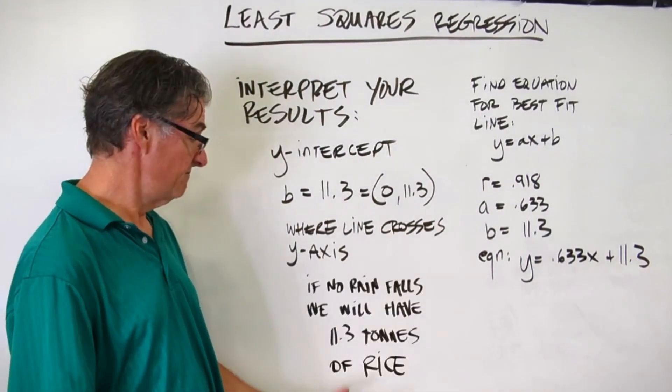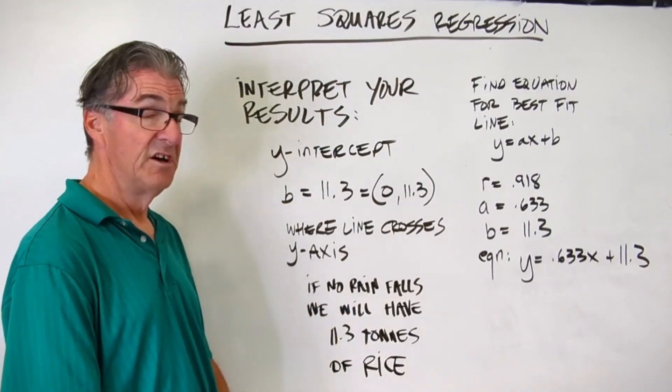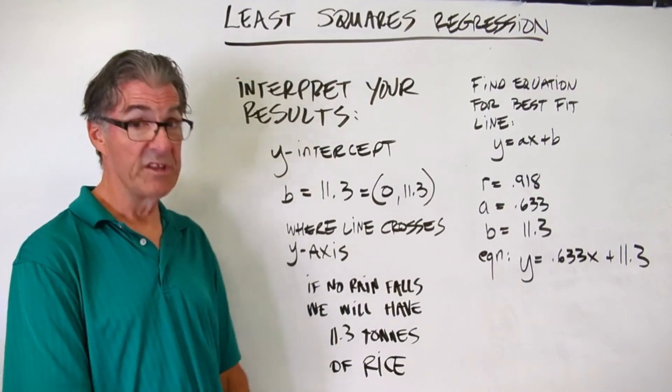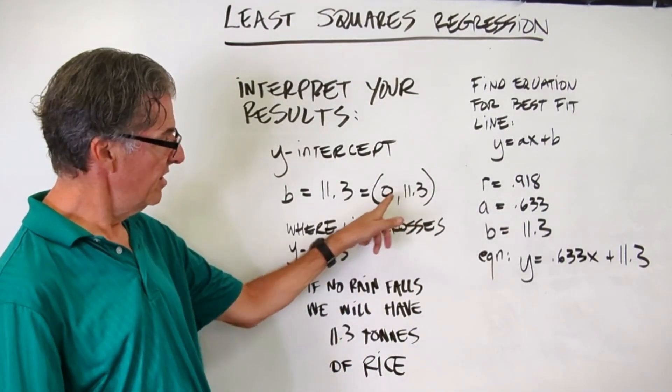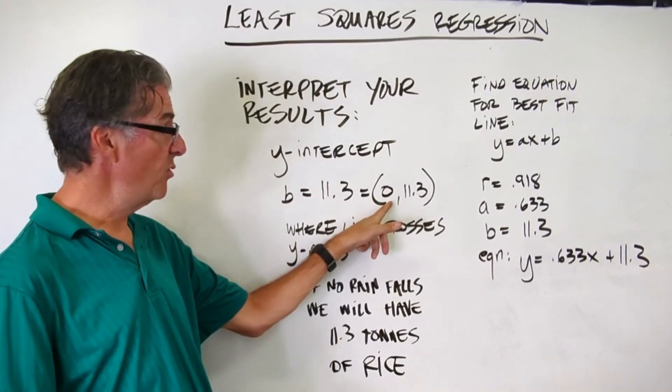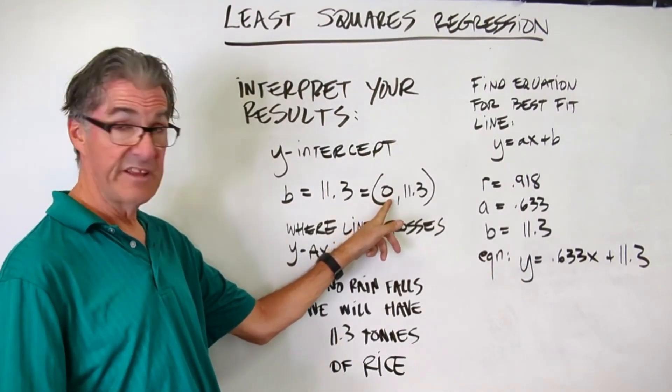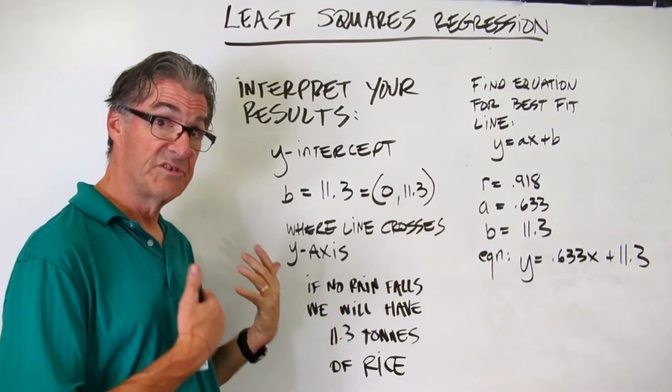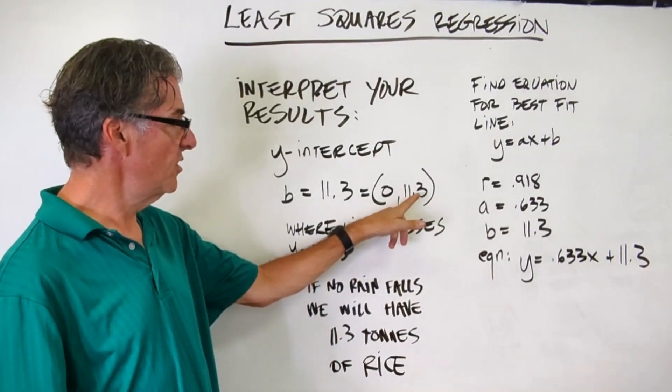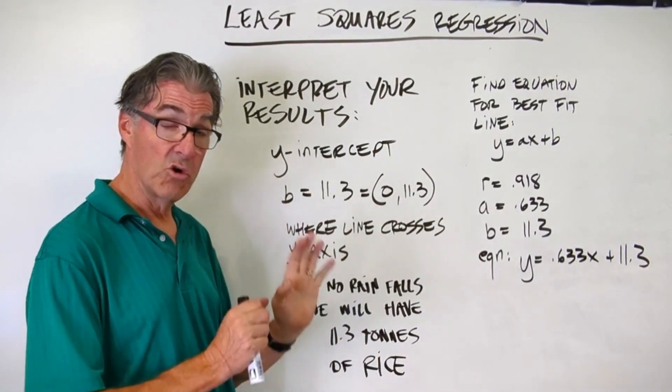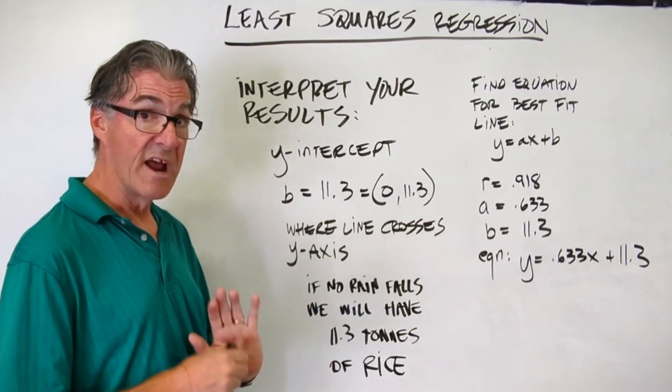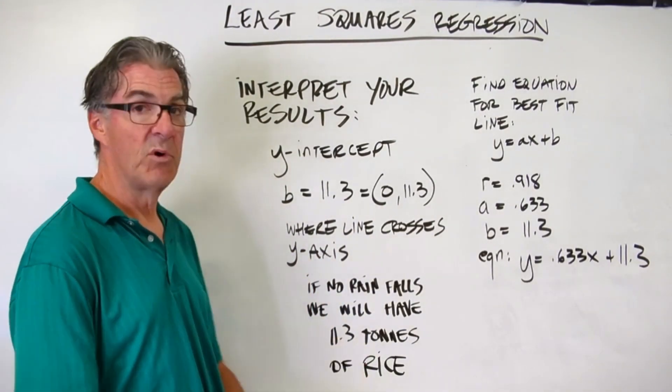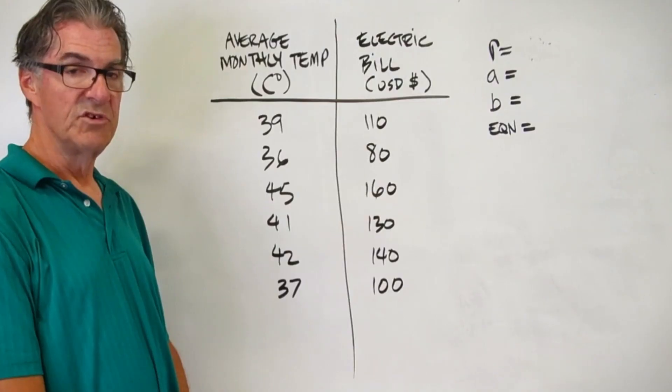Here's what you get. If no rain falls, we'll have 11.3 tons of rice. And you can get that right out of here. The x value of that point is the rainfall. Notice how that's a 0, that means 0 centimeters of rainfall. And so our function, our equation, based on our scatter plot, would predict that if we get no rain, we're still going to get 11.3 tons of rice. Let's do one more example.